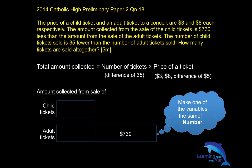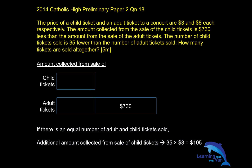Without knowing the number of child tickets and the number of adult tickets, you will not be able to keep the price the same. But here, I can make the number of tickets the same. Let's say there is an equal number of adult and child tickets sold. What would be this additional amount of money collected from the sale of child tickets? That's easy — you take 35 multiplied by 3, and that gives us $105. So that would be the additional amount of $105.